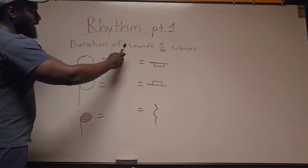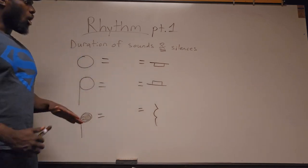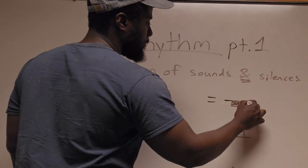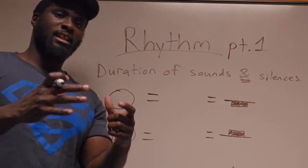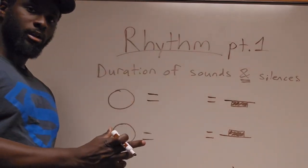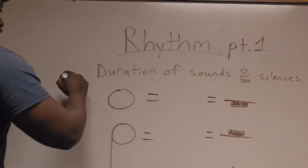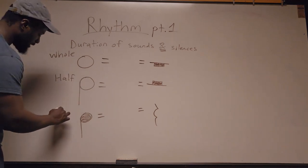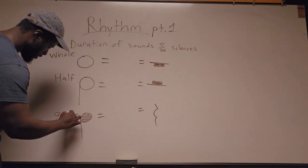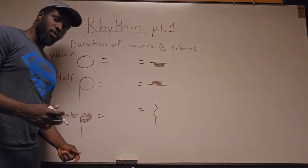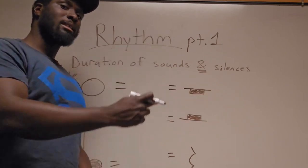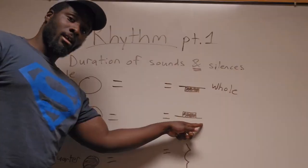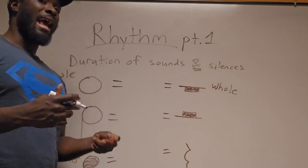On the board I've put an equal sign and left it blank. Now we have what we call rests. When you have a line with a black box hanging below it, that's called a whole rest. If you see a line with a box hanging below, that's a whole rest. If you see a line with a box hanging above the line, that's a half rest.